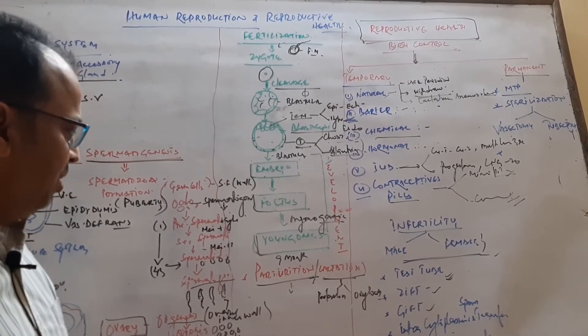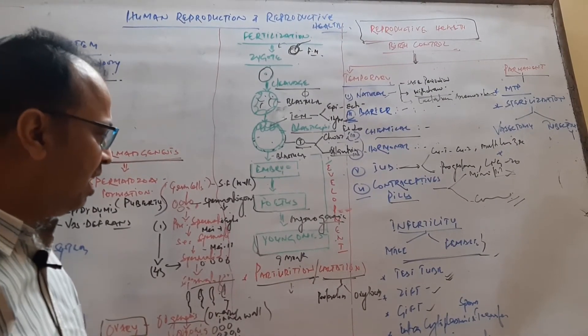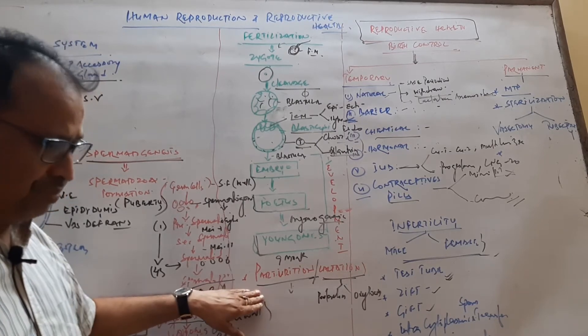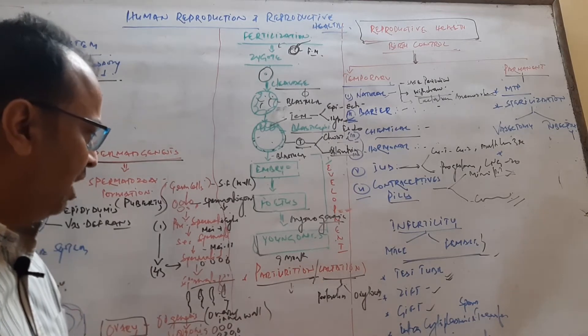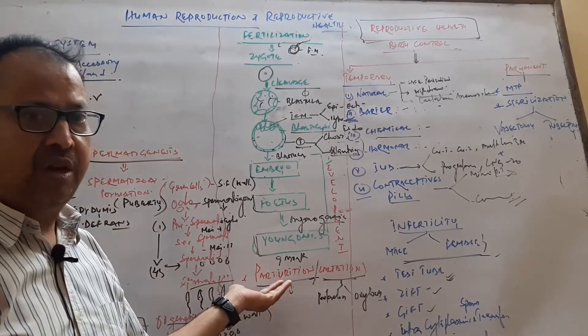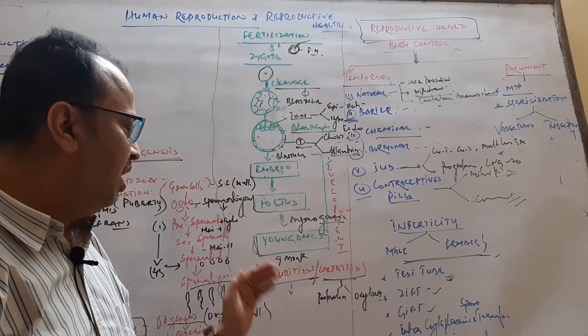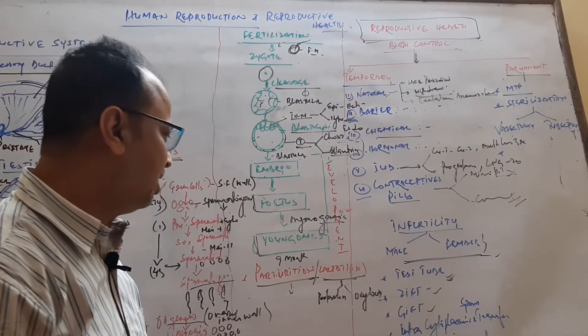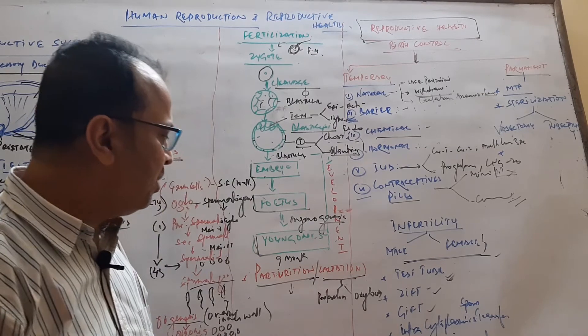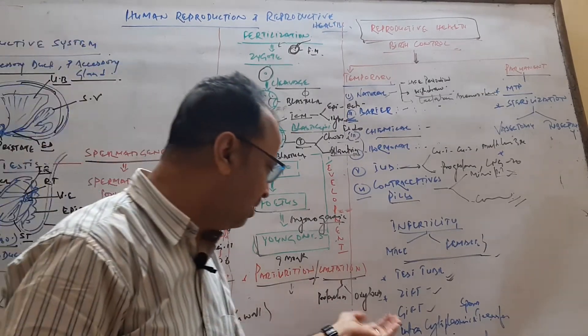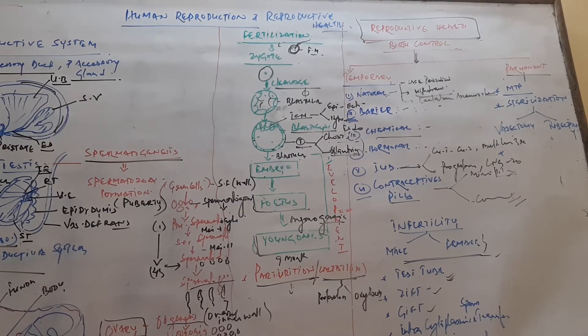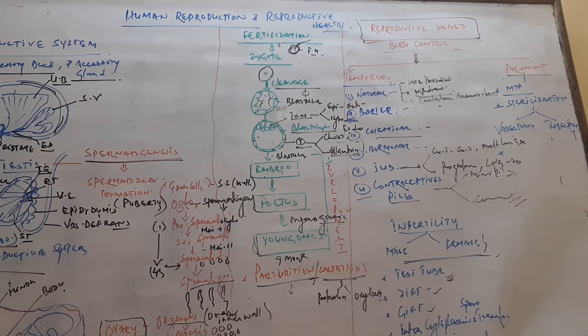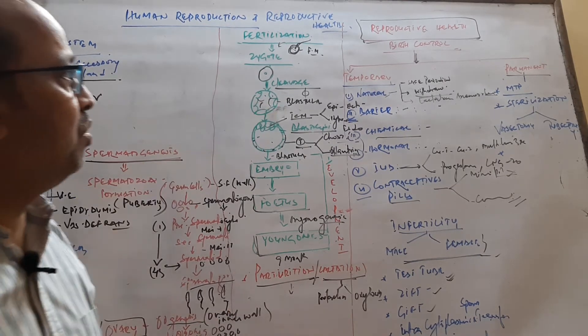This process starts due to the fetal ejection reflex. This reflex is under the combination of fetus as well as placenta. The first process is dilation of the pubic symphysis as well as dilation of the cervix. Then expulsion starts, and finally, the placenta is cut. After parturition, lactation starts under the influence of prolactin as well as oxytocin. This is all about the male and female reproductive system, fertilization, development, and embryonic development.